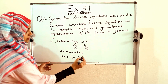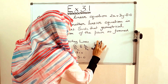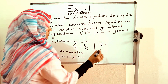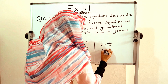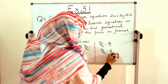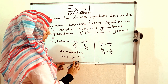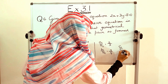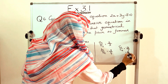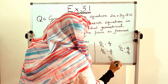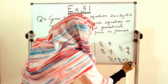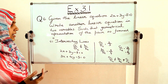Let us check: a1/a2 = 2/3 and b1/b2 = 3/4, and c1/c2 = 8/5. Since a1/a2 ≠ b1/b2 ≠ c1/c2, our lines are intersecting and the equations are consistent.